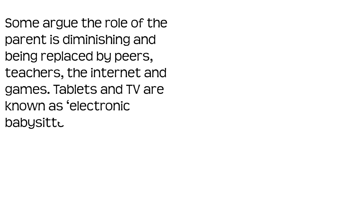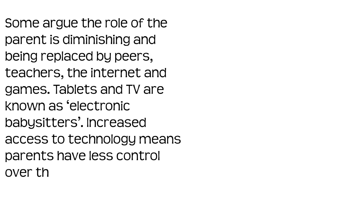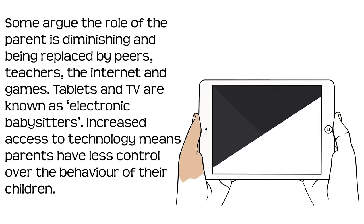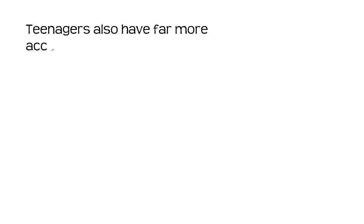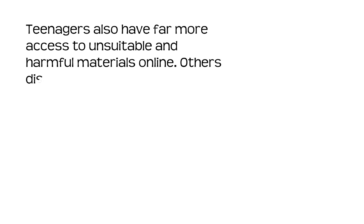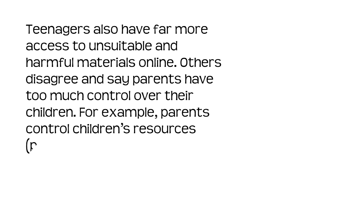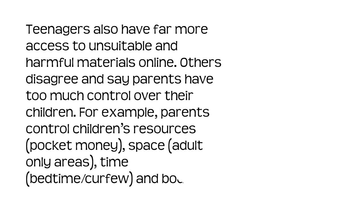Teenagers also have far more access to unsuitable and harmful materials online. Others disagree and say parents have too much control over their children. For example, parents control children's resources like their pocket money, their space — having adult-only areas — their time, what bedtime and curfews they have, and their bodies, including the dinner and clothes they wear.